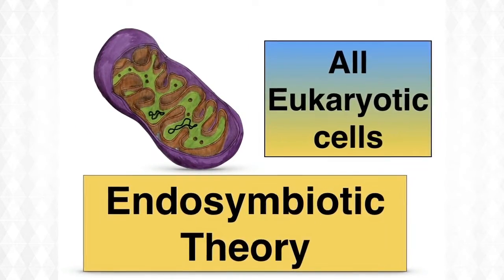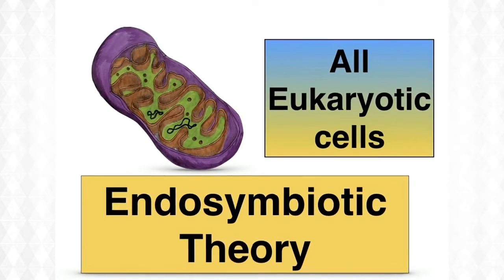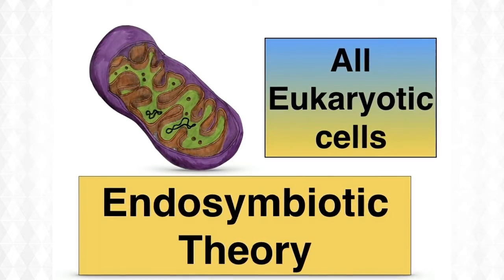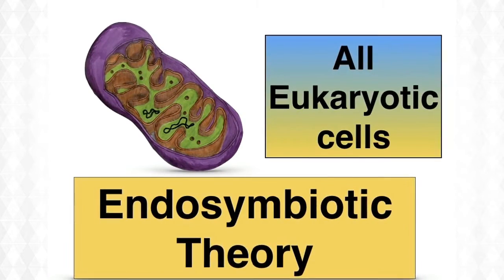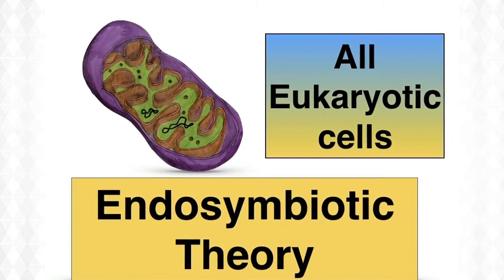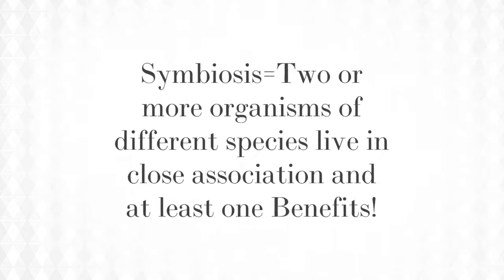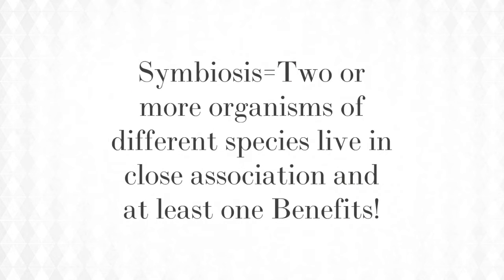All eukaryotic cells contain mitochondria. So how did they end up within eukaryotic cells? It's not on your course, but it's amazing to know about the theory known as the endosymbiotic theory. When you studied ecology, you encountered symbiosis — this is when two or more organisms of different species live in close association and at least one benefits.